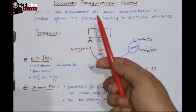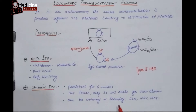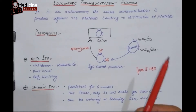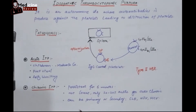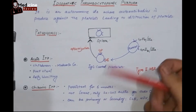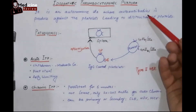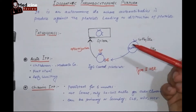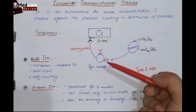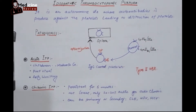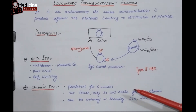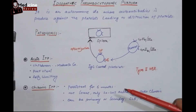Idiopathic thrombocytopenic purpura is basically a type of autoimmune disease where autoantibodies are produced against the platelet, causing destruction of platelets. As a result, there will be thrombocytopenia.